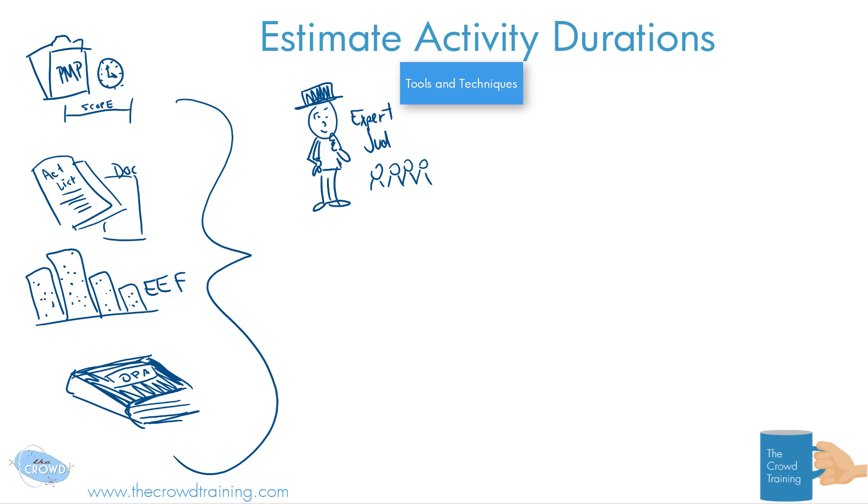We could also use analogies. If we're doing this thing now and we did something similar, they're a little different because it's a different time or different people doing it, but it's sort of like that. We can use the analogy that we did it this way and it was, let's say, two days, so we can approximate that maybe it will take about two days again.